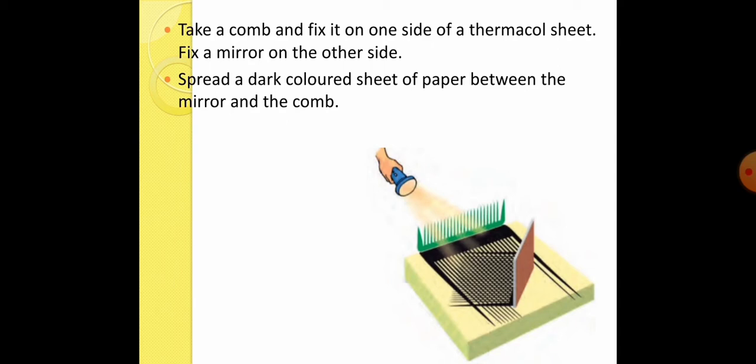Okay, as you can see, this is a thermocol sheet and this is a comb and on the other side, you can see the plane mirror. Spread a dark color sheet of paper between the mirror and the comb. Okay, mirror aur comb ke beech mein, ek dark sheet jo hai, us ko hum ne place karna hai. Okay, ab, jo torch hai, us se aap light ko mirror per send kijiye.